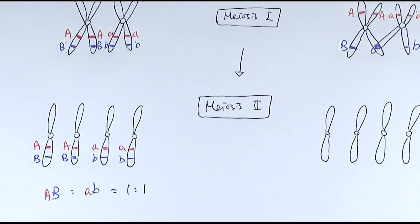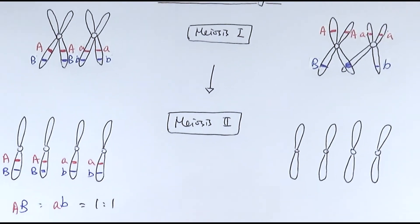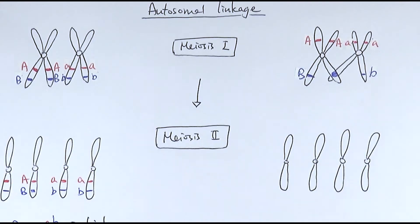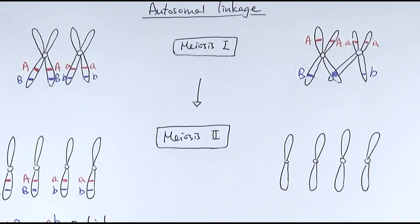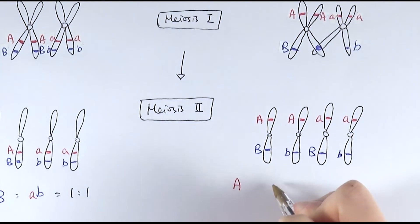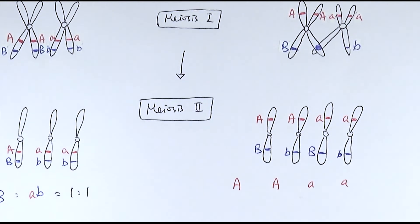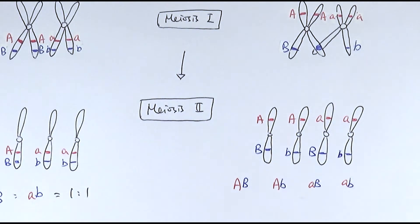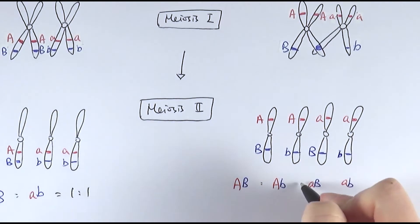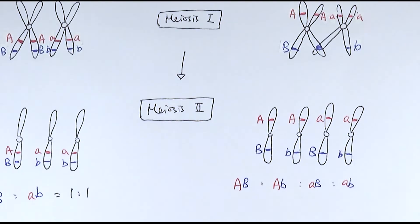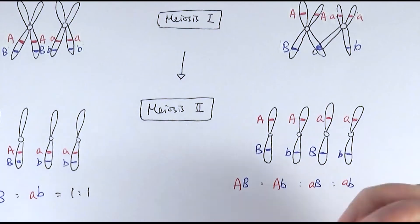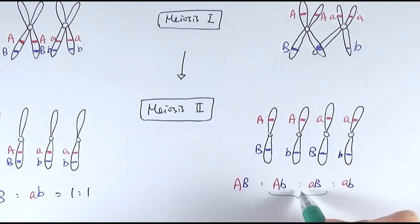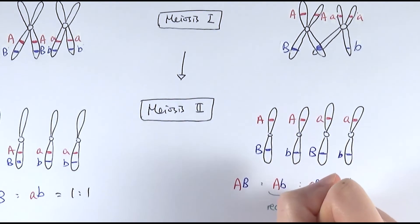Whereas in another case of autosomal linkage, when the two genes are slightly further apart, there is a slightly higher chance for crossing over to occur, separating and mixing some of the alleles. So imagine if there's only one chiasmata being formed - you will get the resulting chromatids where the genotype combination has changed. You would have big A big B, big A little b, small a big B, and small a small b - all with a ratio of one to one to one to one. These ones that have been mixed up, where the resulting genotype is different from the original parent genotype, we call them recombinant offspring.